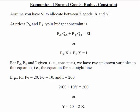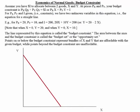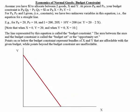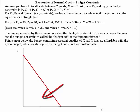Notice that y equals 20 minus 2x is a straight line, so we only need to plot two points. When x equals 0, y equals 20, and when y equals 0, x equals 10. Identifying those two points at the extremes gives us the budget constraint. The area between the budget constraint and the y and x axes is called the opportunity set or the budget set.